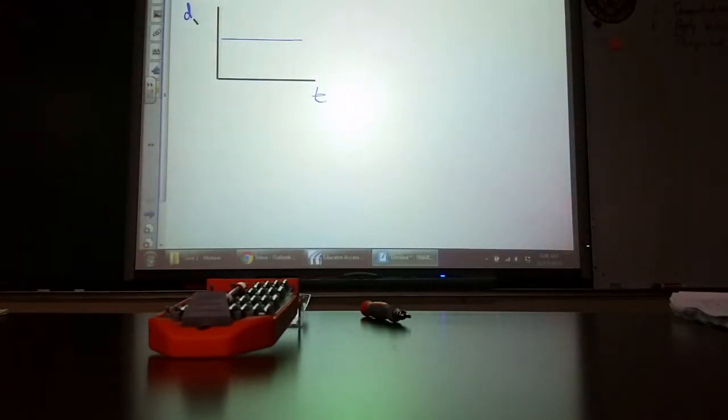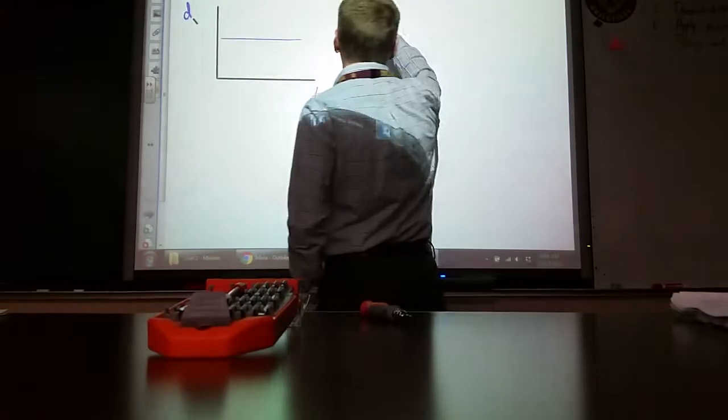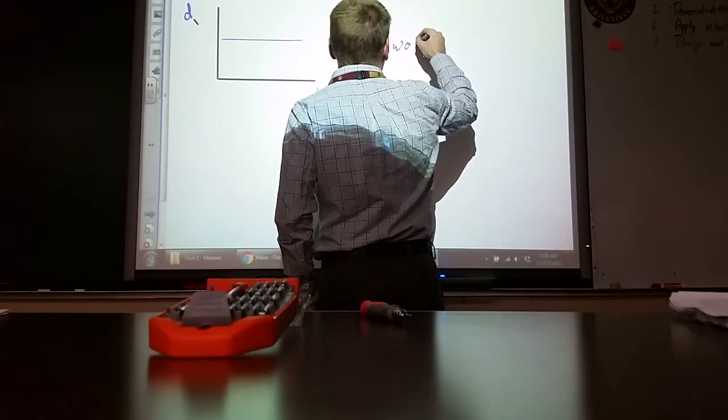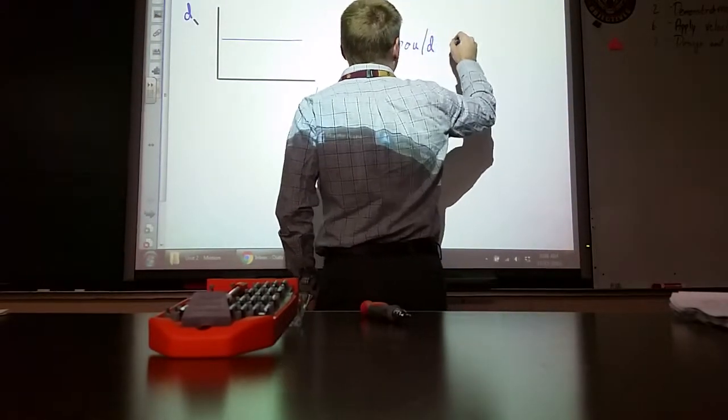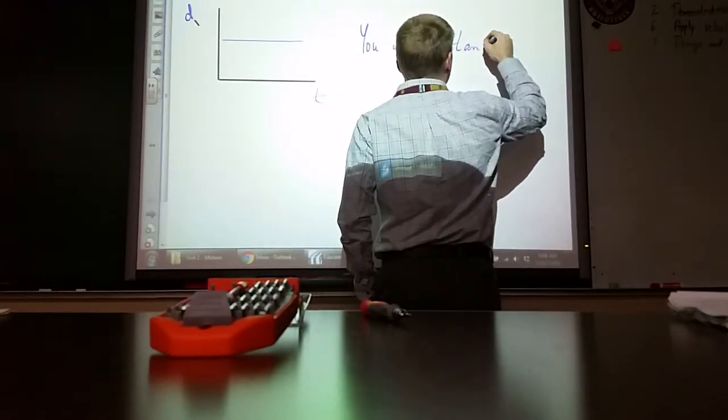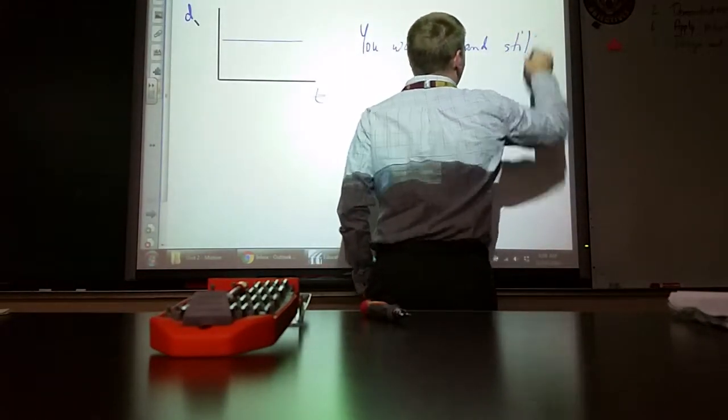Let's say that you get a line that's straight across on there. How would you have to move with your motion detector in order to do that? Stay still. You would stand still.